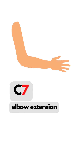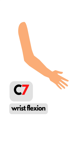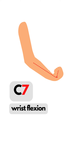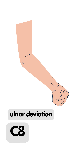C7 is elbow extension. This is easy — the extension and the imaginary line on the forearm make the number 7. We also have wrist flexion for C7. For this, an imaginary line is drawn through a flexed wrist and the forearm.